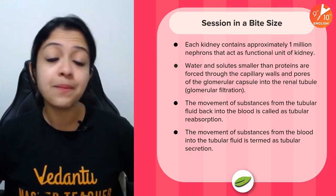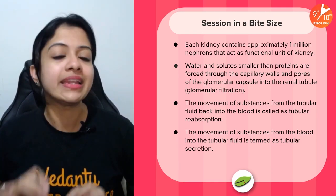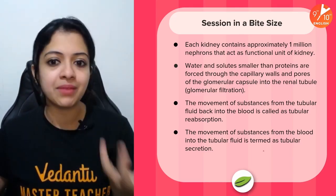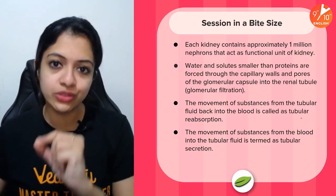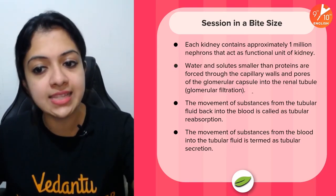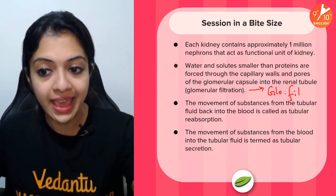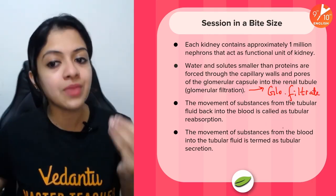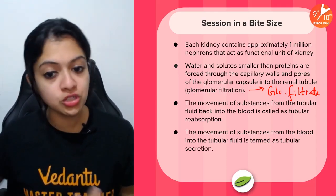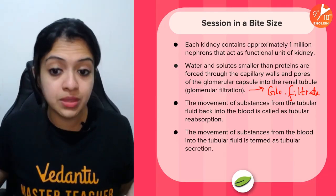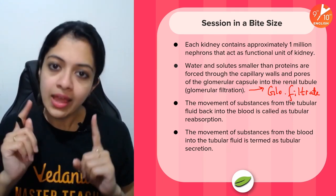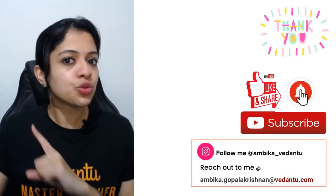The entire session in a bite-size summary: each kidney contains approximately 1 million nephrons that act as a functional unit. Water and solutes smaller than proteins and red blood cells are forced through the capillary walls and pores of the glomerular capsule into the renal tubule — this is glomerular filtration, resulting in the formation of glomerular filtrate. Movement of substances from the tubular fluid back into the blood is tubular reabsorption. Movement of substances from the blood into the tubular fluid is called tubular secretion. Remember it with the story analogy — you will find it much easier to recall.